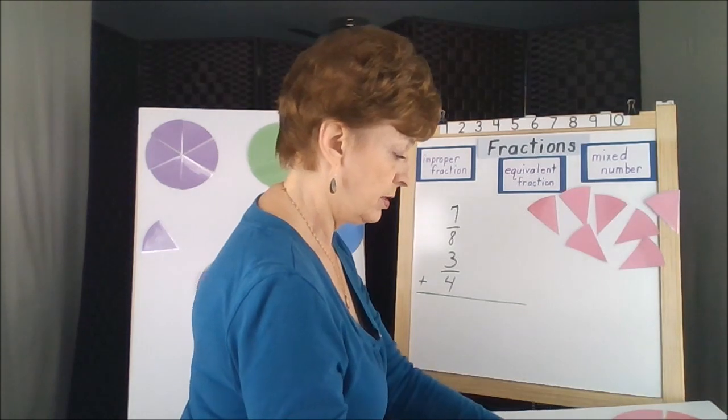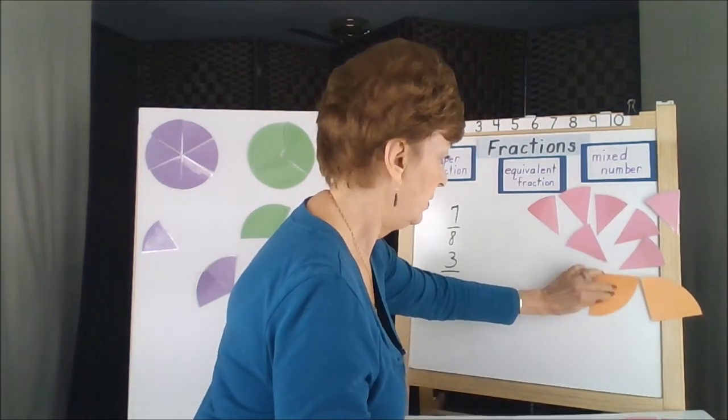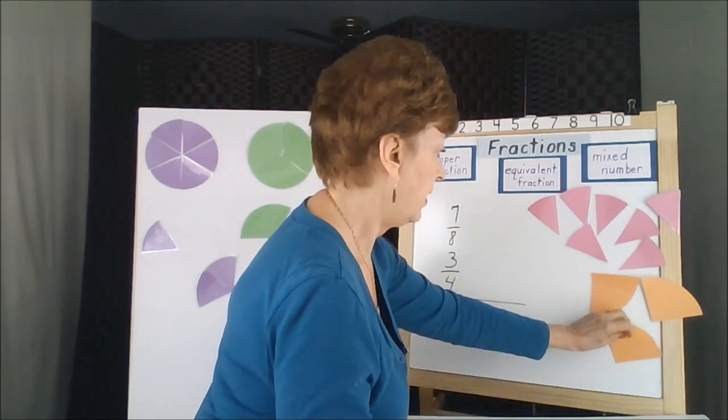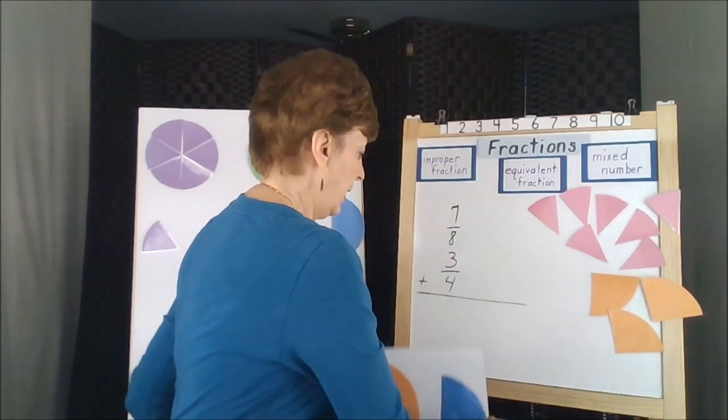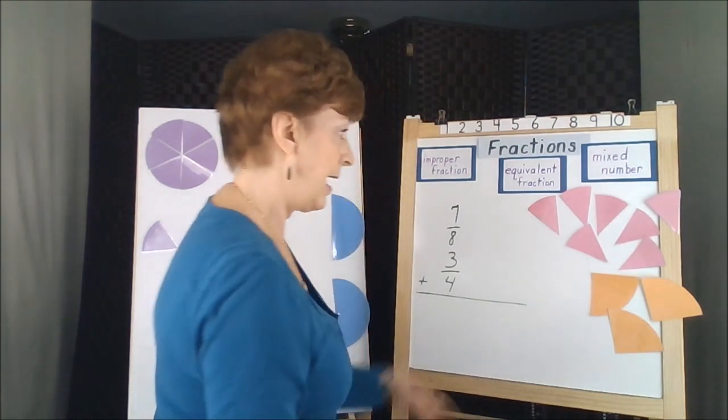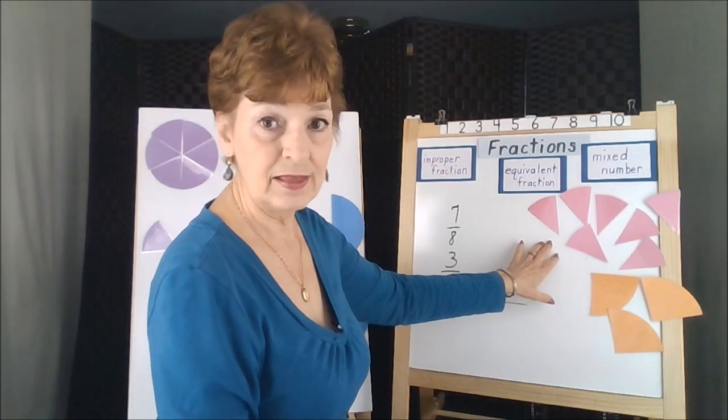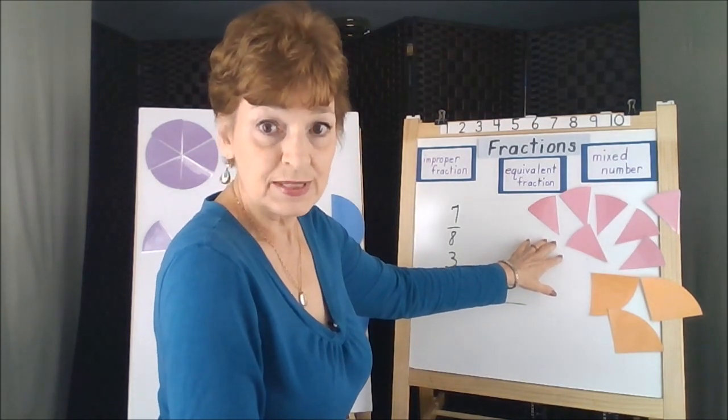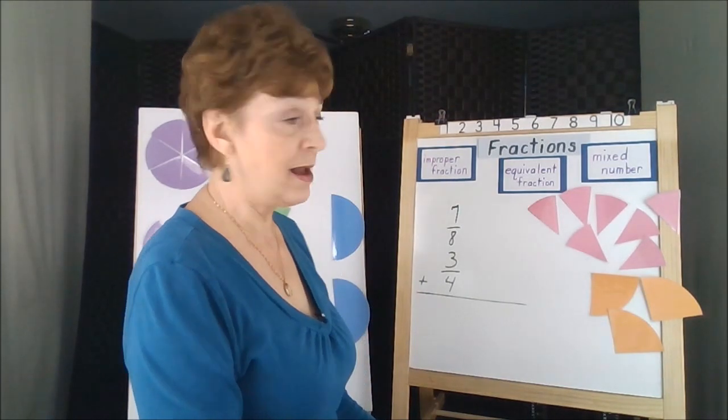And we have three fourths. One, two, and three. It's obvious that we cannot add the fourths to the eighths. They're not the same size piece. So the first thing we have to do is make common denominators.